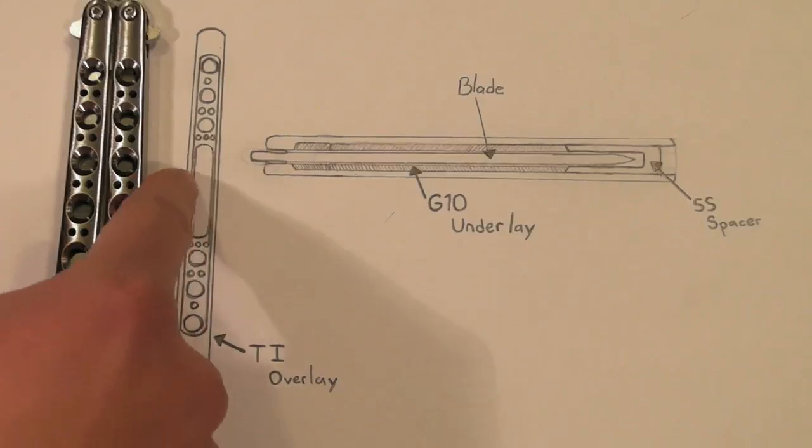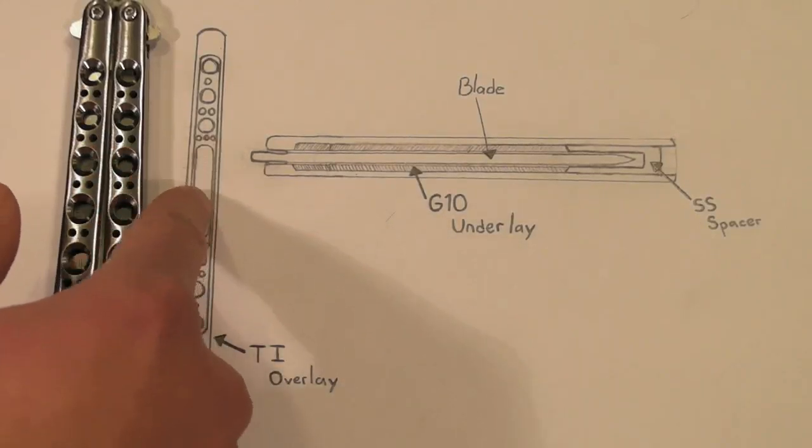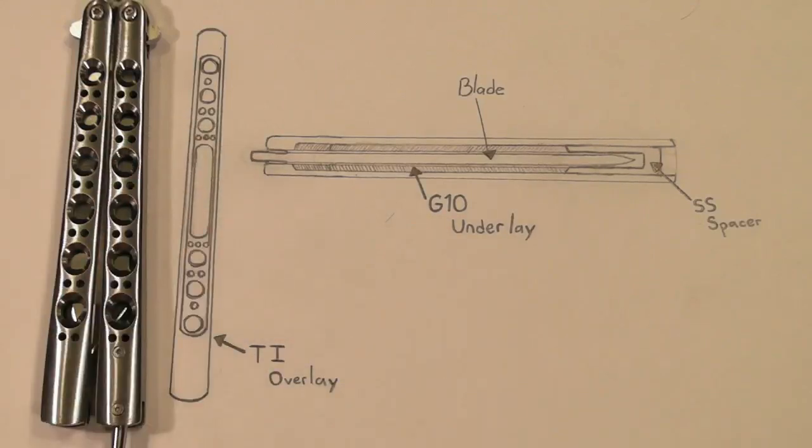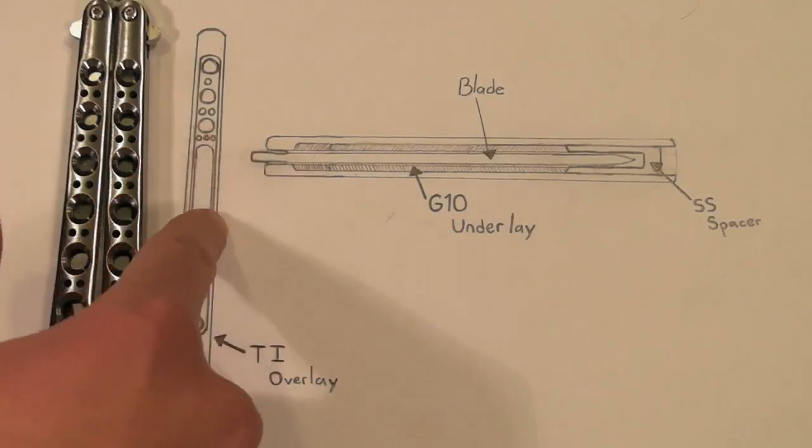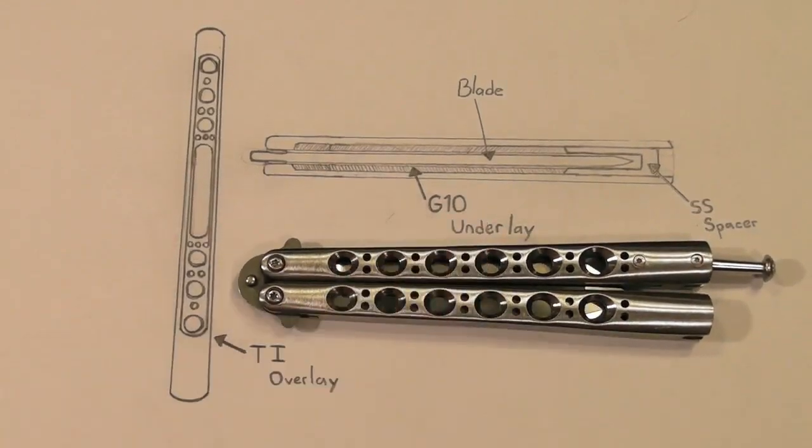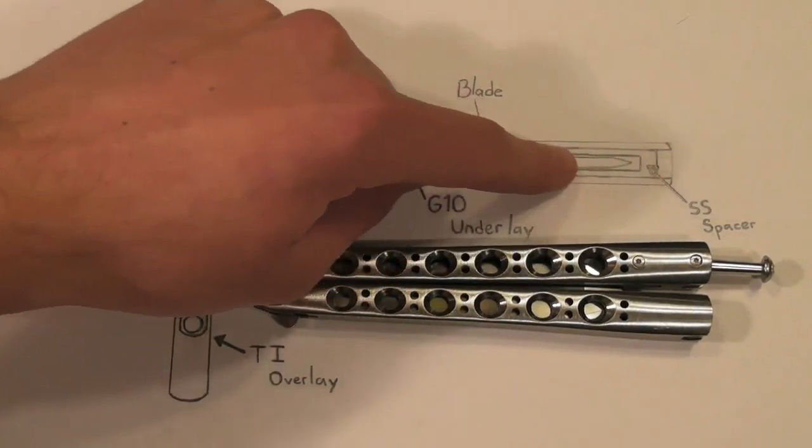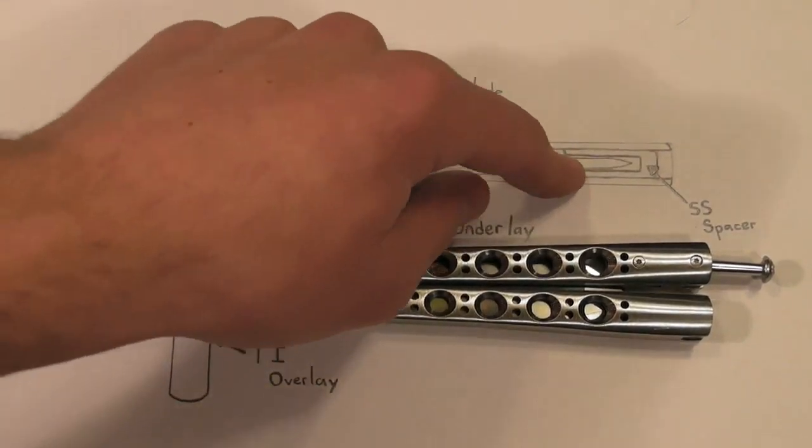Of course you have the chance to, or you can choose if it's just to be straight milled out and see through. But I think it would be cool to have a different color G10 inlay right there. But yeah, I think it's a great design because you get that SS spacer that basically acts just as a liner instead of a spacer.